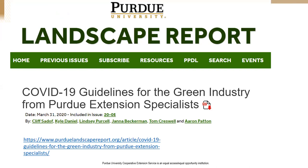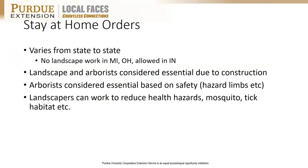The results of stay-at-home orders are very different in different states. In Michigan and Ohio, no landscape work is allowed, but the landscape industry is considered essential under clauses related to construction. Arborists are also considered essential based on safety needs. The International Society of Arboriculture put together a white paper on this, reiterating that trees which are dying are going to fall down whether or not we are in the middle of COVID. So if you've got trees in hazard situations — next to a property or across a highway — they still have to be removed to protect public safety, which makes it an essential need.